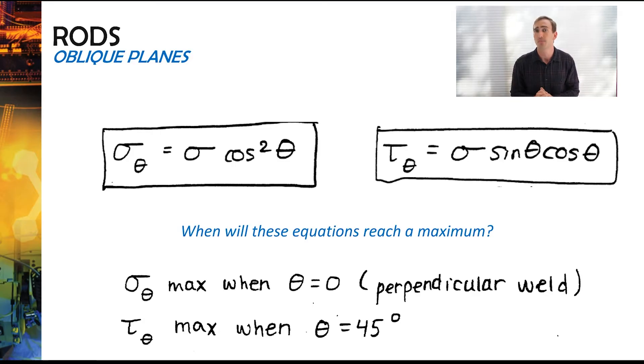Shear stress will be maximum when the angle is 45, and the reason this is because when you look at the equation, sine of 45 times cosine 45 will be the maximum that equation can achieve.